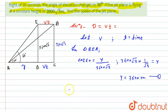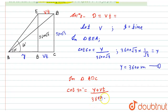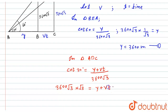Now in the larger triangle ADC: cot 30° equals adjacent upon opposite. The adjacent side is AC, which is the combination of y and vt, so adjacent = y + vt. The opposite is 3600√3. So cot 30° = (y + vt) / 3600√3. Since cot 30° = √3, we get 3600√3 × √3 = y + vt.